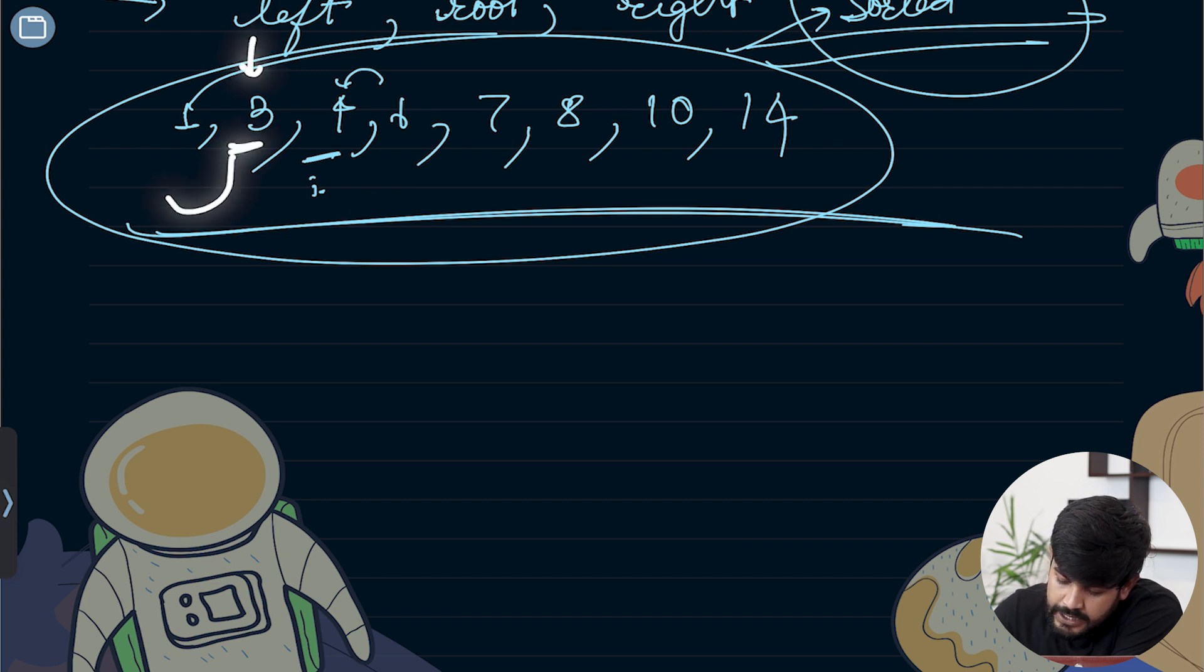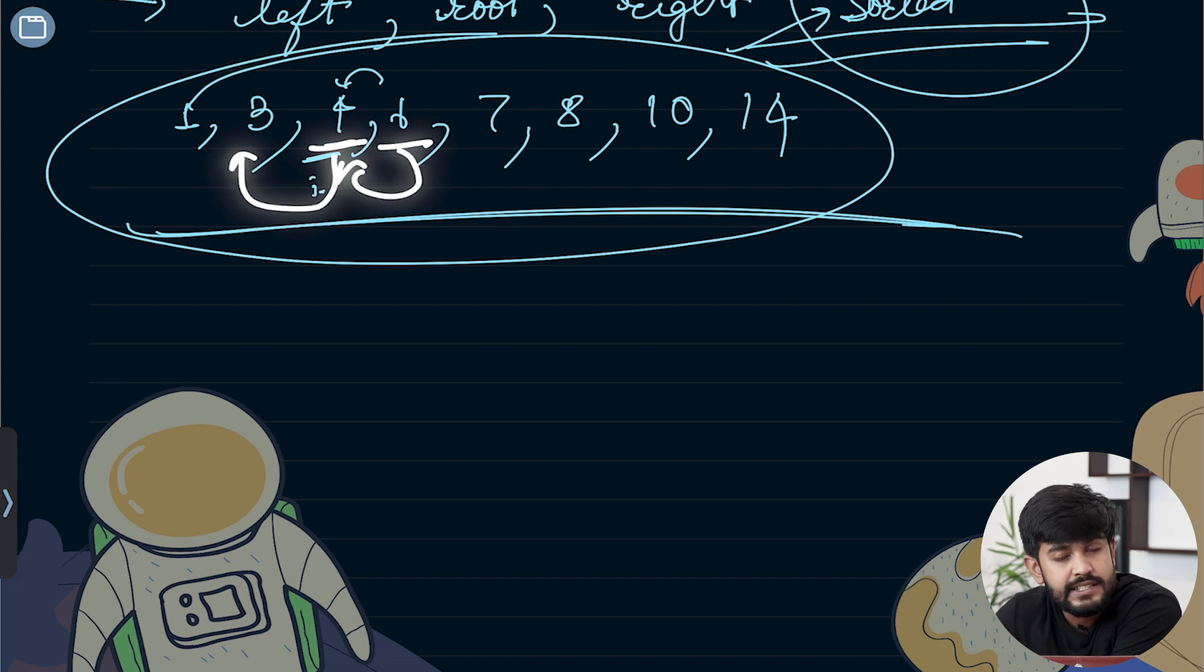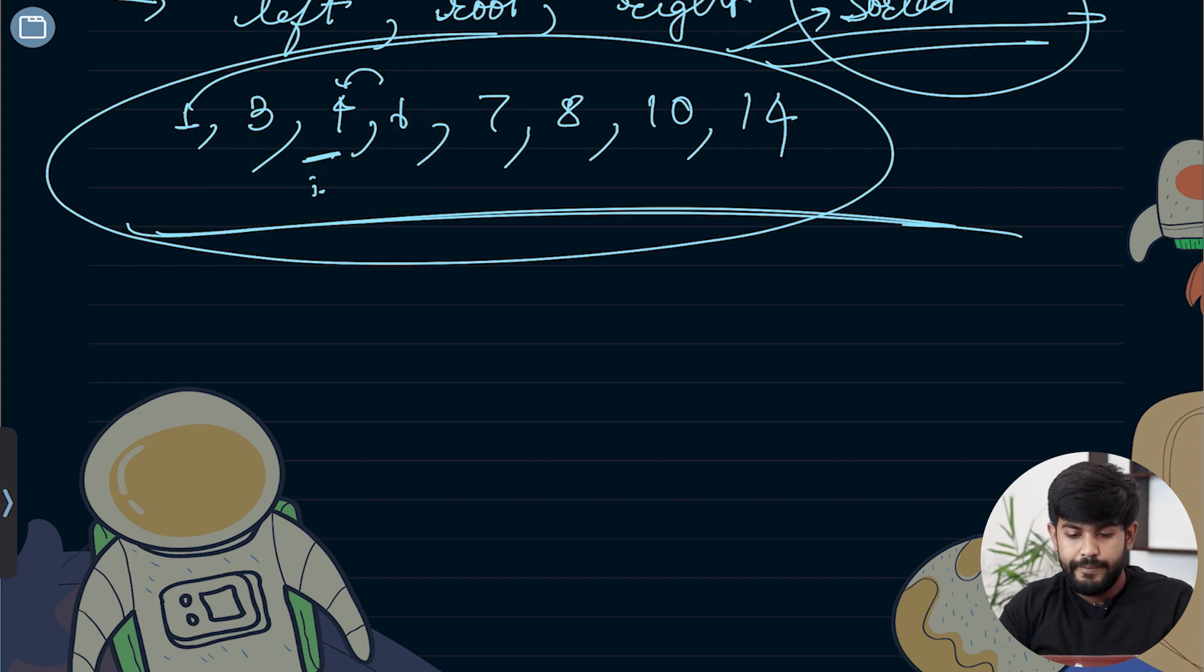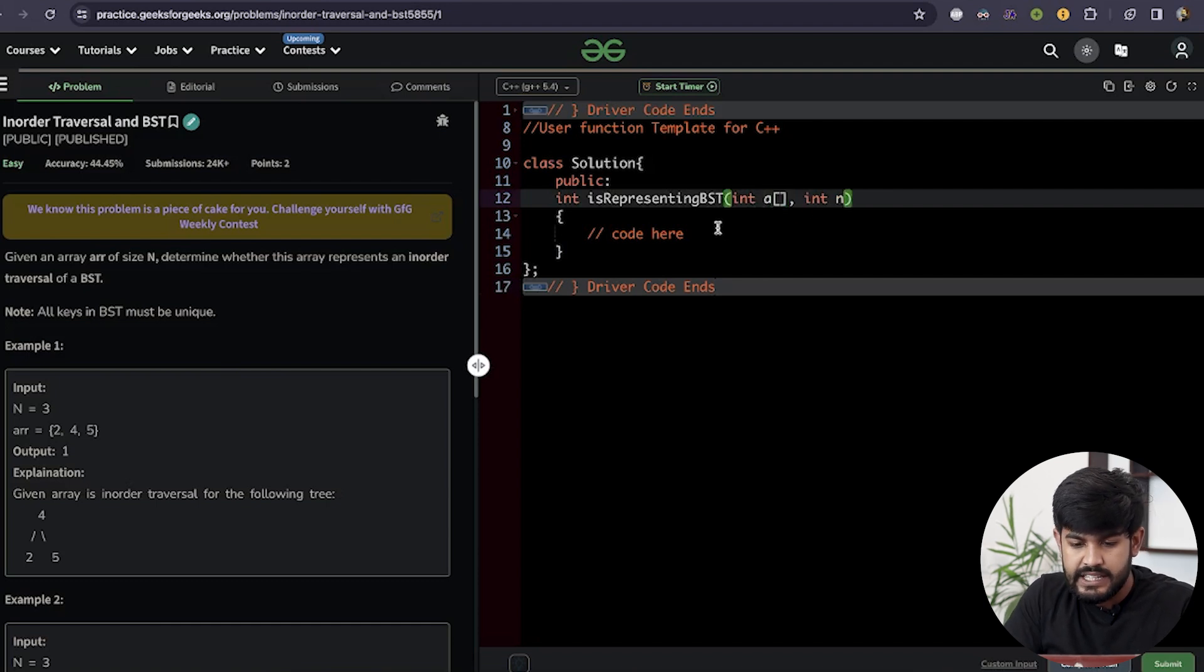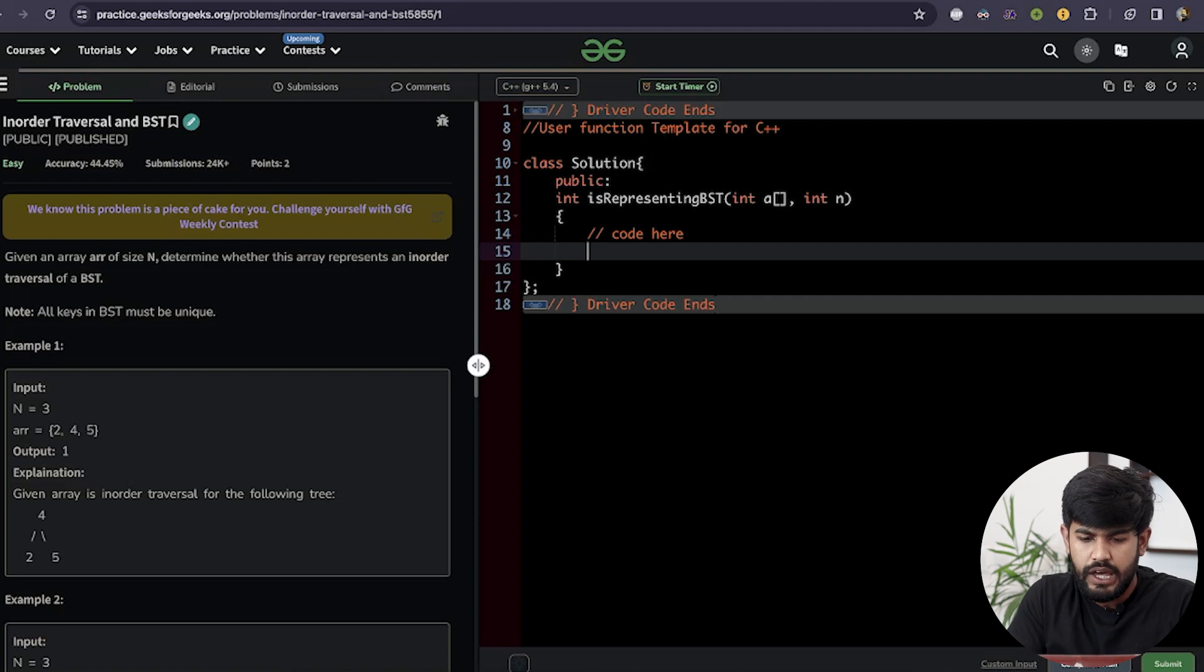We can start from the second element and ask if your previous element is less than you or not. I'm a lazy person, so I'll represent this with lowercase a. I'll start with a for loop.